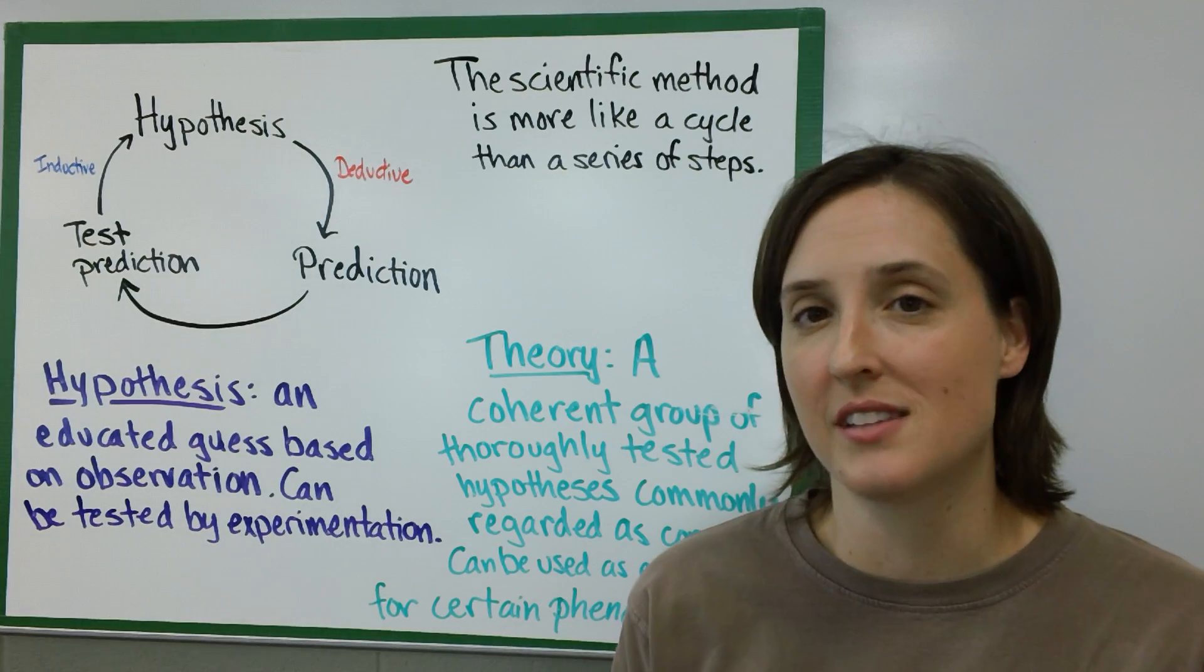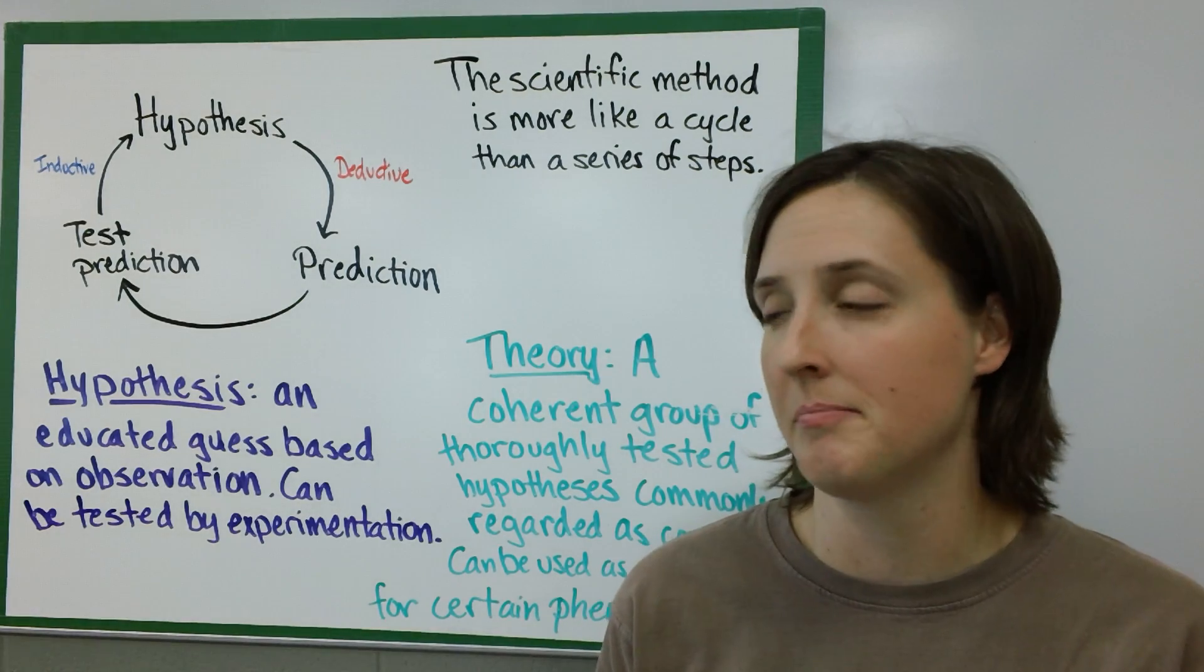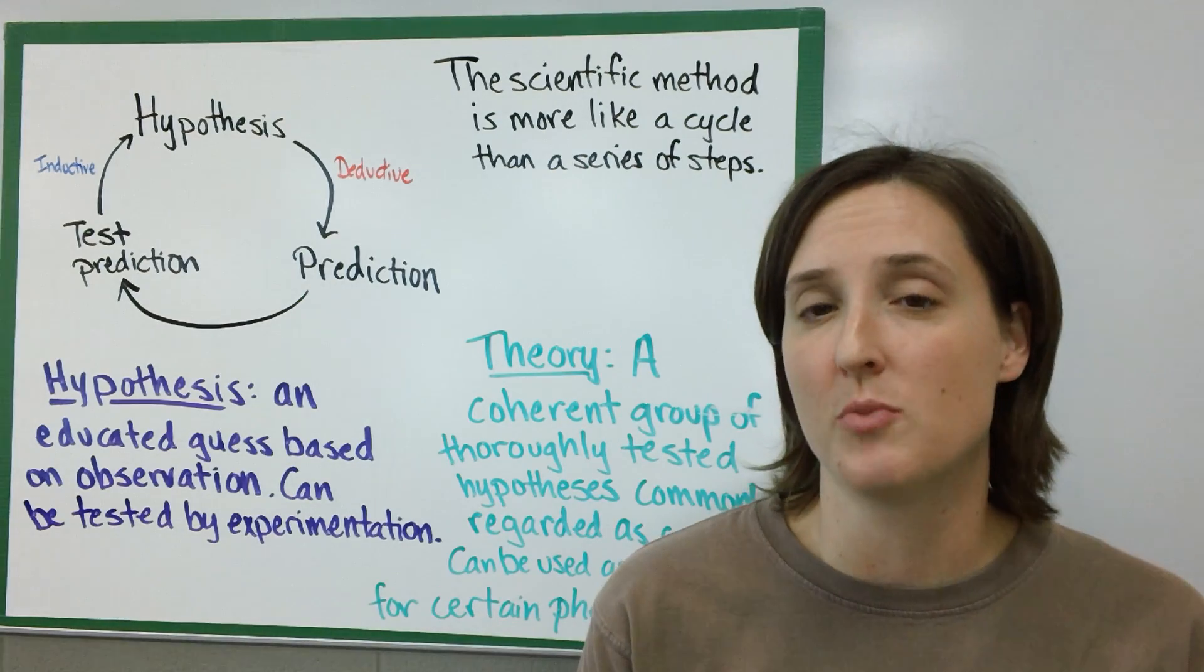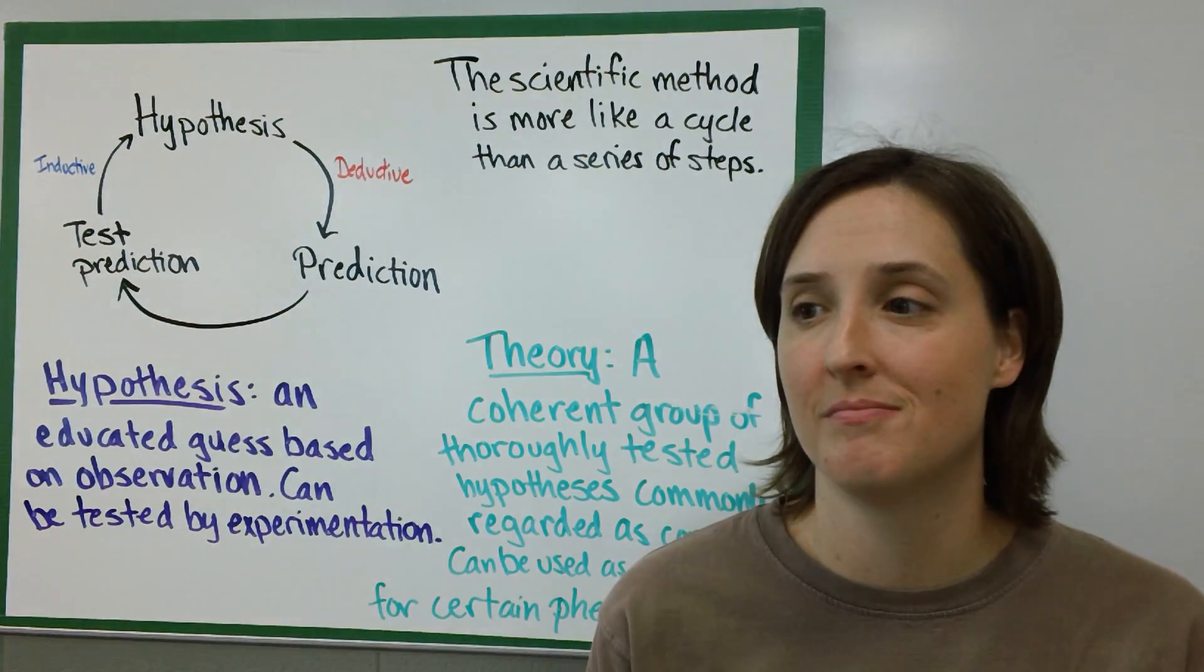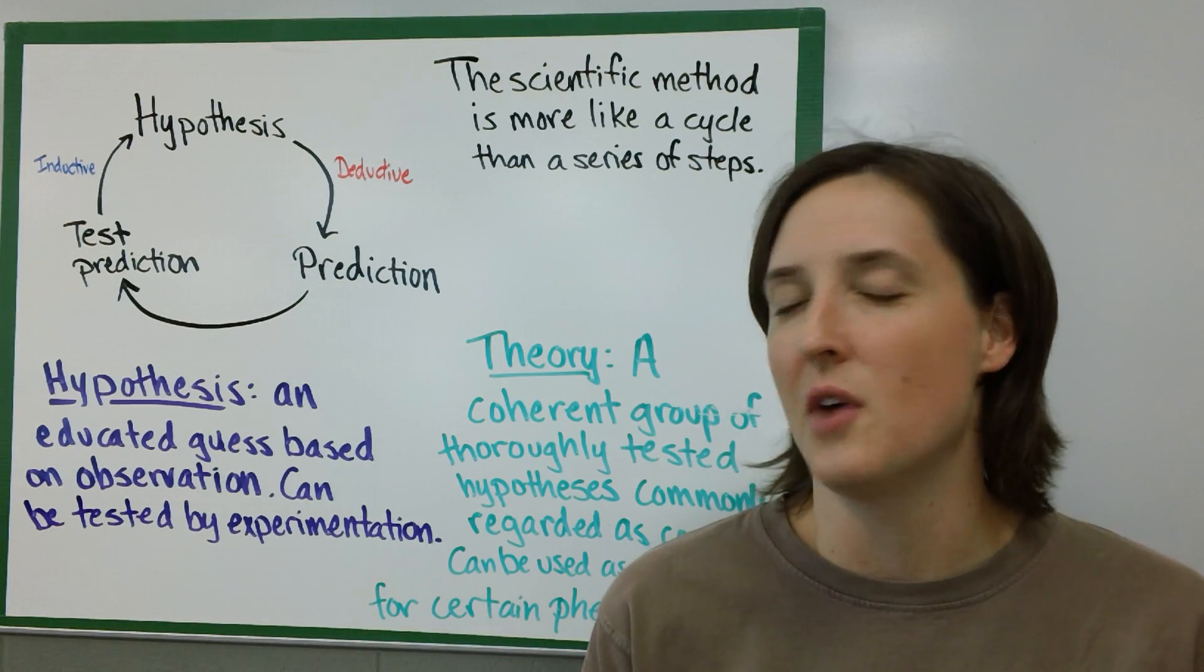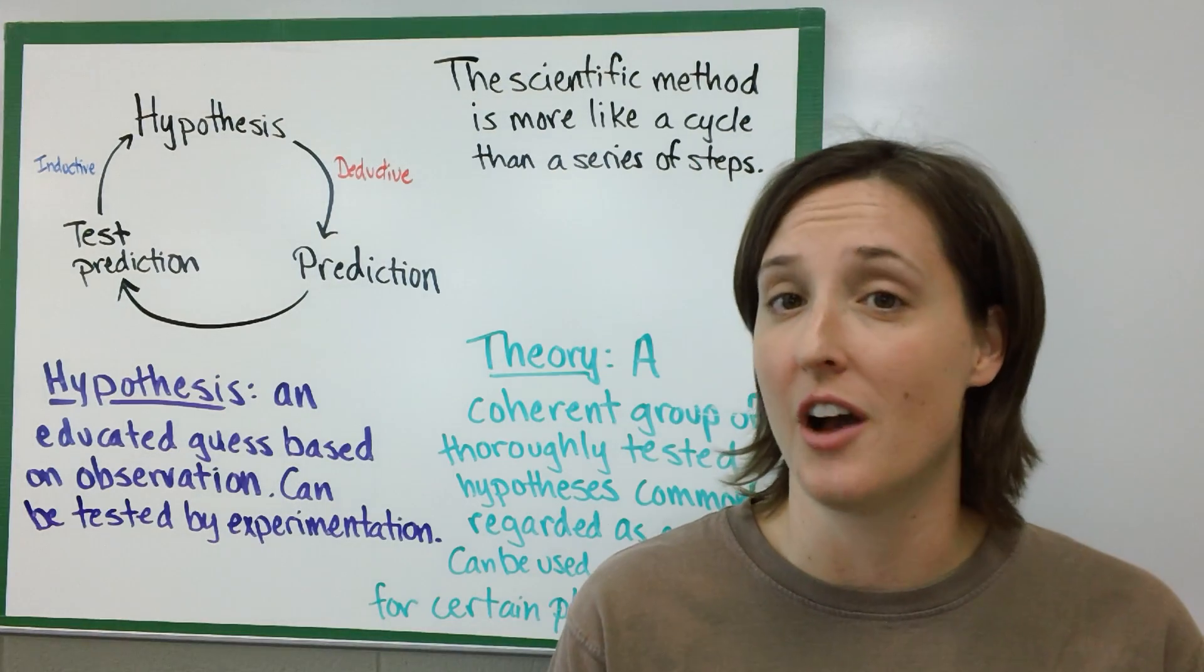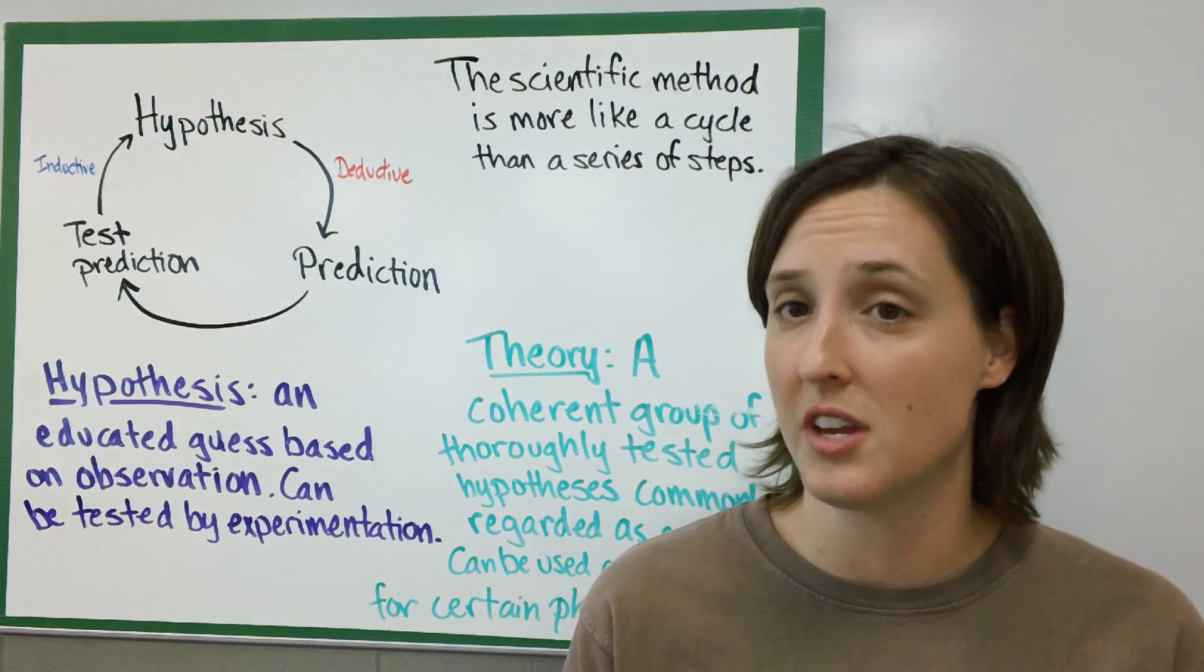A really important thing in science is being able to distinguish between a hypothesis and a theory, because in our everyday language we actually use theory as a regular everyday term, like that's a conspiracy theory. Here's the scientific definition of a hypothesis and a theory so you can get them correct.